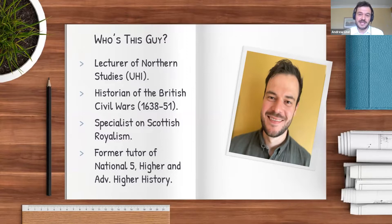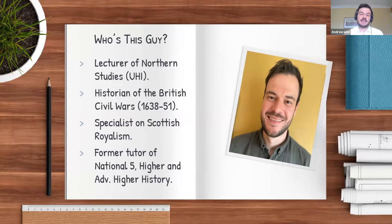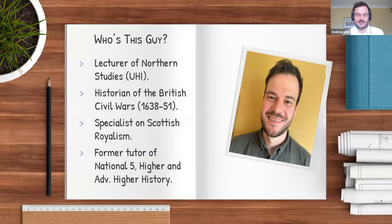Scottish Royalism is basically the guys and gals who came out in support of Charles I and Charles II during the Civil War period. I look at Royalists in Scotland, but also at interactions across the Three Kingdoms. What gives me an insight into the topics you teach in the classroom is that I was formerly a tutor of National Five, Higher, and Advanced Higher History. I did that all the way through my PhD, and it wasn't so long ago that I did my own Higher and Advanced Higher, so I can just about remember what the remit was.